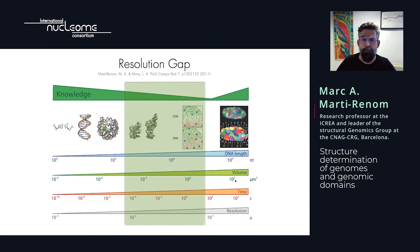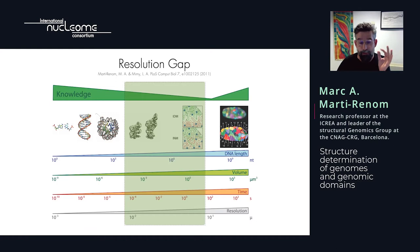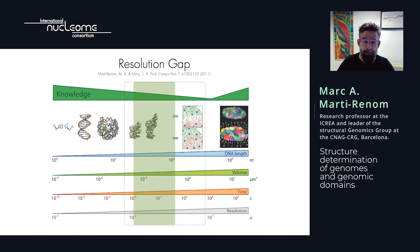Many years ago, with my friend Leonid Milne, we wrote a paper where we talked about the resolution gap, and I think it's relevant to bring it back today because what I'm going to be telling you is about the efforts we're making to fulfill this resolution gap. The resolution gap refers to what we know about the genome in three-dimensional space. Thanks to crystallography and NMR, we know up to the nucleosome packing at atomic resolution, but we don't know that for long pieces of DNA — kilobases or megabases. At the other end, thanks largely to light microscopy, we know that chromosome territories exist. Over the years, thanks to chromosome conformation capture technologies from the Dekker lab and light microscopy, we are making this gap smaller.